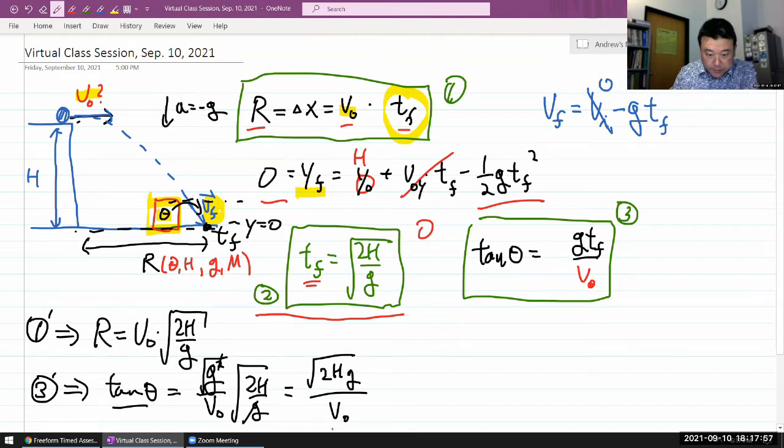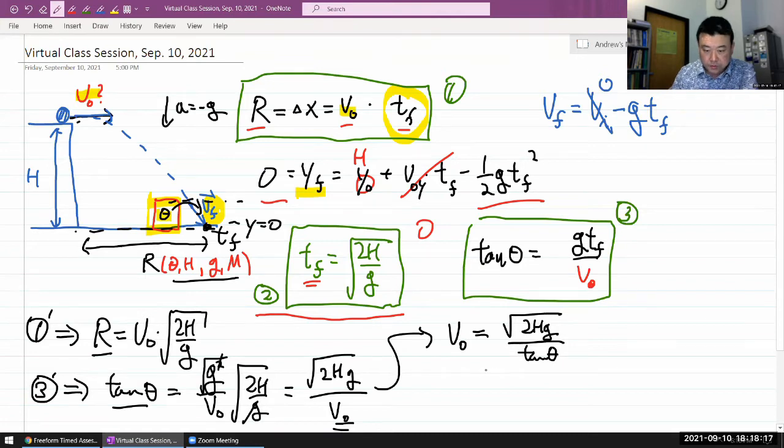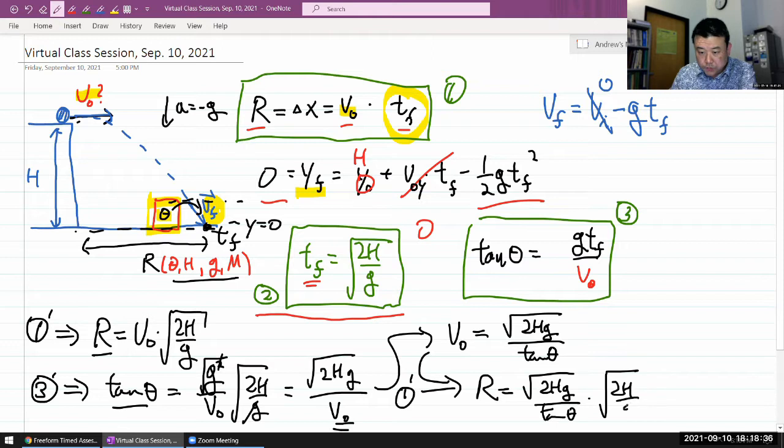I can solve this equation for V naught and plug that into my first equation to get an expression for R entirely in terms of these quantities. So solving that for V naught, I get square root of two H G over tangent theta. Plugging that in, R is equal to square root of two H G over tangent theta times square root of two H over G. G is cancelled, doesn't matter what planet you are on. Square root of two H times square root of two H gives me just two H. So the final answer here is two H over tangent theta. Wow.